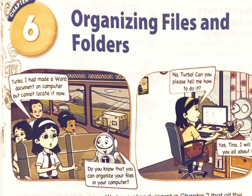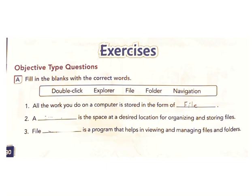Lesson 6: Organizing Files and Folders. Exercises — Objective Type Questions. A: Fill in the blanks with the correct words. Word bank: double-click, explorer, file, folder, navigation.